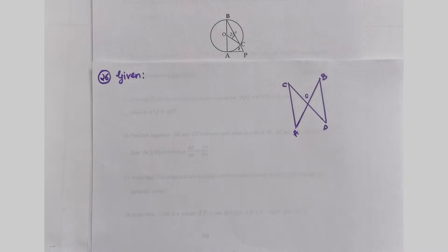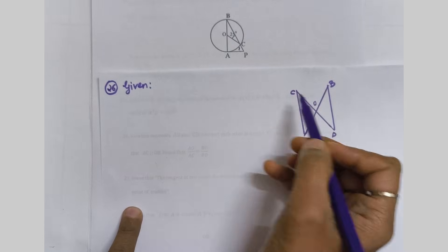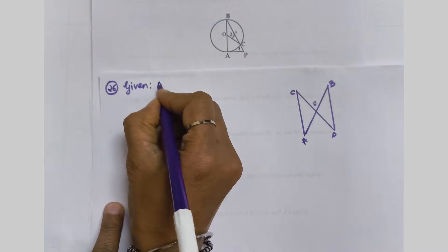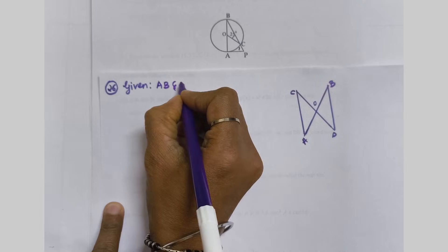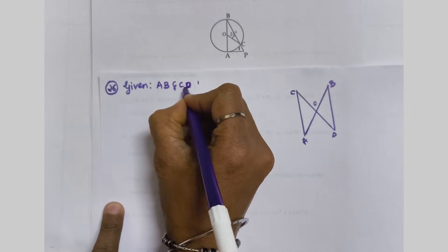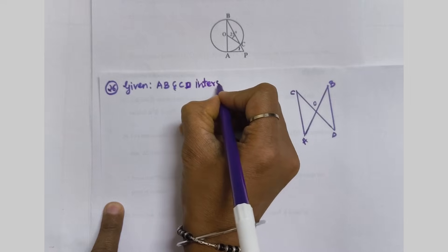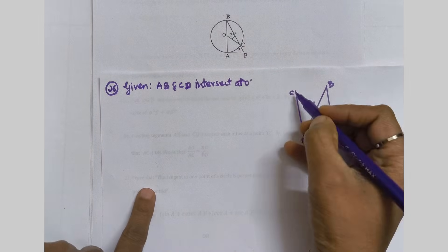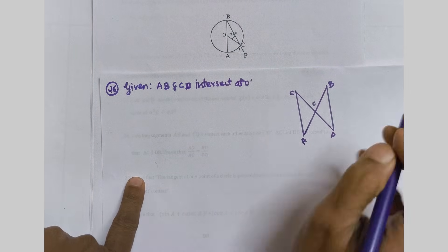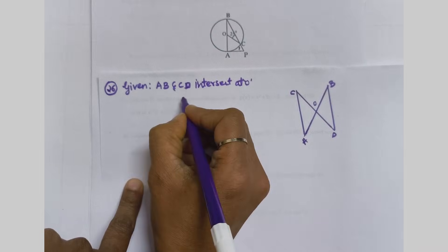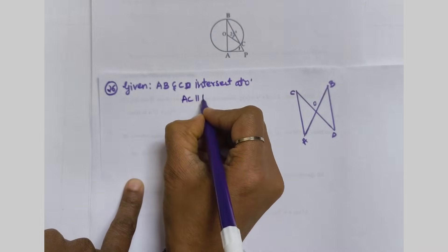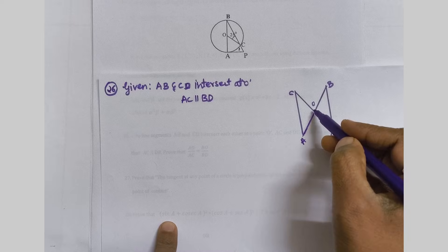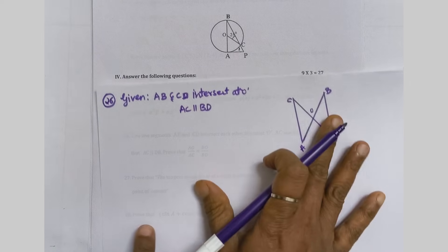We write the given: AB and CD intersect at O. AC is parallel to BD. To prove: AO/AC = BO/BD. First we write the given information — the two lines intersecting at O and AC parallel to BD — then state what we need to prove.